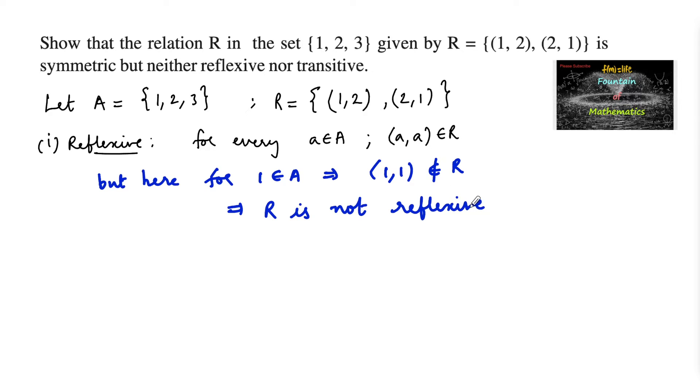One example is enough to disprove it. Now let us consider the second one, symmetric. The condition for symmetric is if (a,b) belongs to the relation R, then (b,a) must belong to relation R, where a and b belong to the set A. So if one ordered pair (a,b) exists, then we have to check for (b,a).